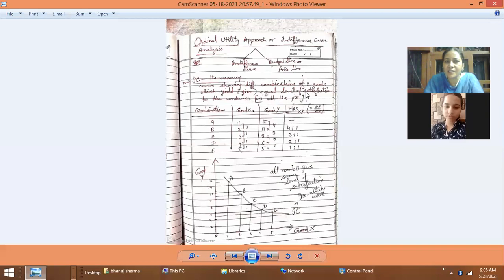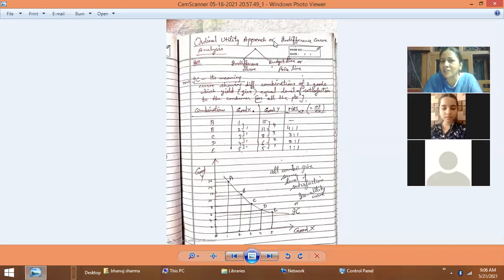Yesterday we started the chapter on consumer equilibrium. There are two types of approaches to study this concept. One approach is known as cardinal approach or cardinal analysis, according to which utility can be measured in numbers - cardinal numbers meaning counting numbers.